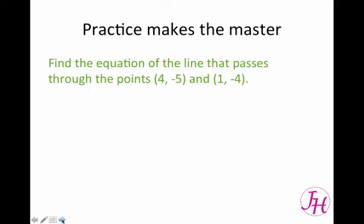So now it's your turn to try one on your own. Find the equation of the line that passes through the points (4, -5) and (1, -4). This is just like the last problem where you have two points. Remember, we were given two points. You find the slope and then you can either use the slope-intercept form or the point-slope form of the line. So go ahead and try this in your notes and we'll discuss it when we get back to class.